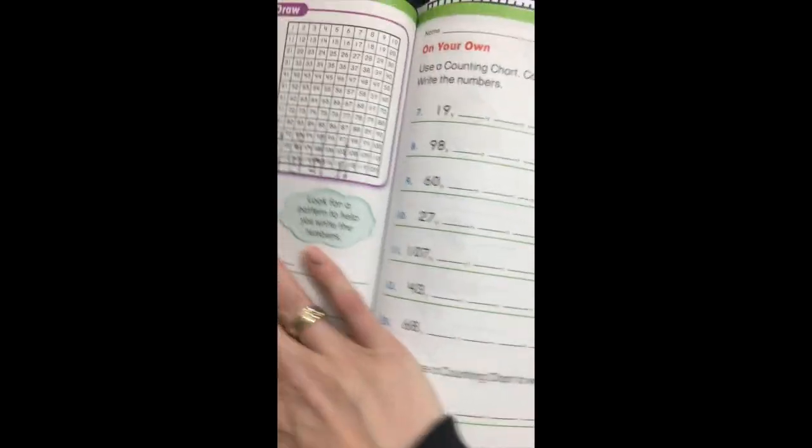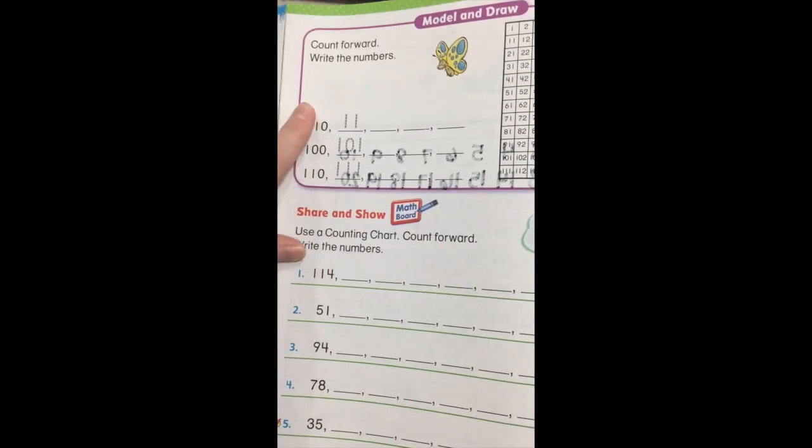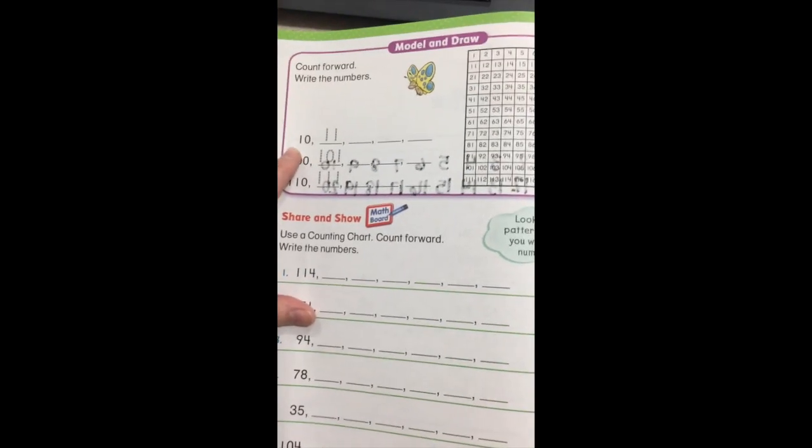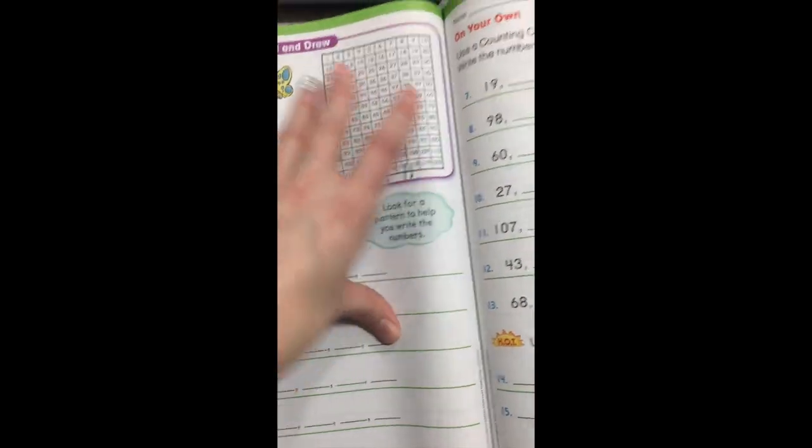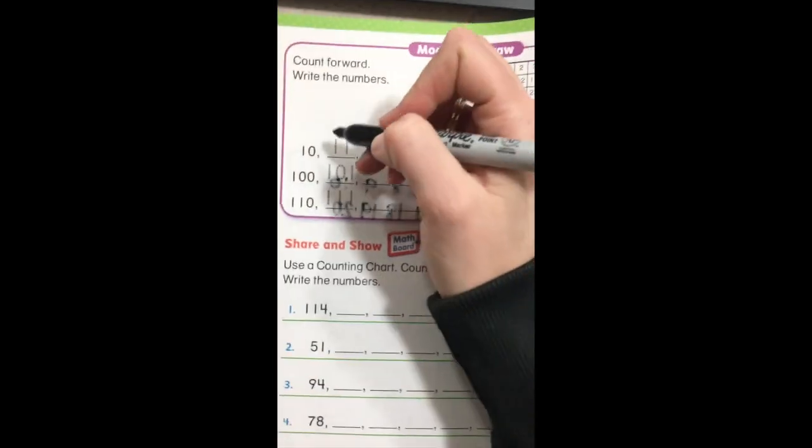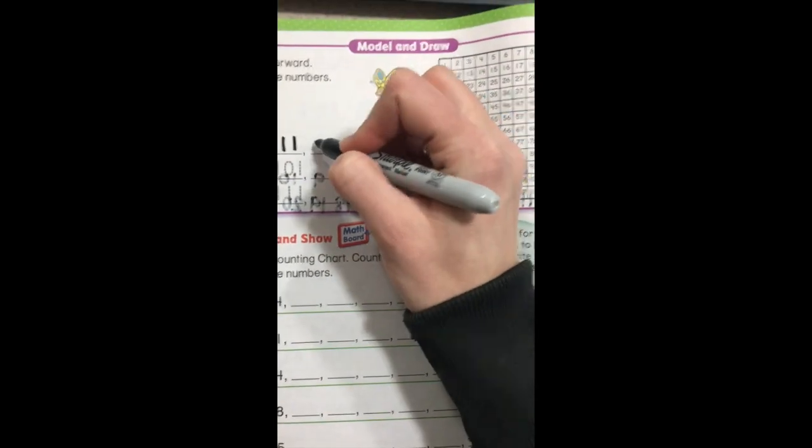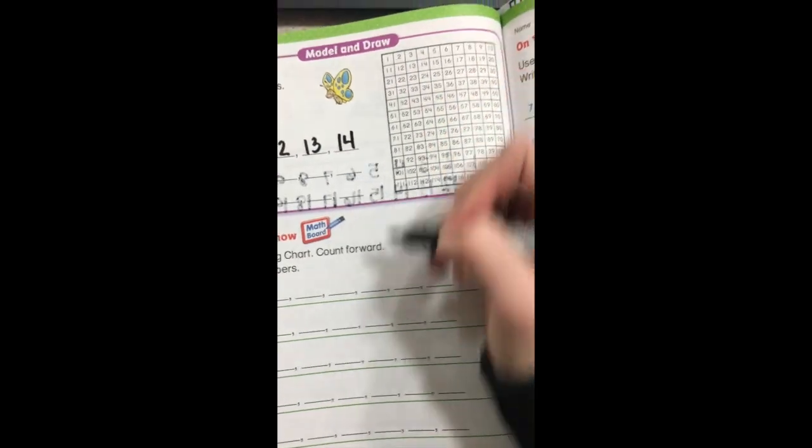Let me go ahead and flip the page and show you what we'll be doing next. So today we're going to be counting forward by one number. It says count forward, write the numbers. So if you need help, they have put a 120 chart up here for you to use, and so you can use that as your cheat sheet if you need. If not, you can start right here and it says 10. What comes after 10? They did that one for you, 11. Go ahead and trace it. Then 12, then 13, then 14. Very good.